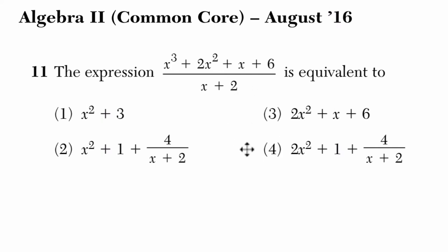So in this problem, especially in Algebra 2, if you see the ratio of two polynomials, they're asking you to do long division. So let's set this up. In this problem, we've got x cubed plus 2x squared plus x plus 6, and we're dividing that by x plus 2.